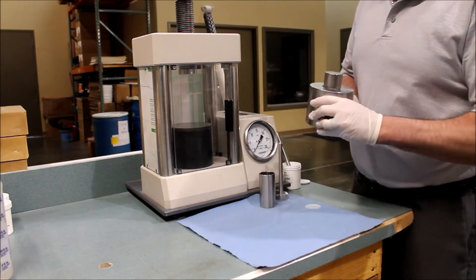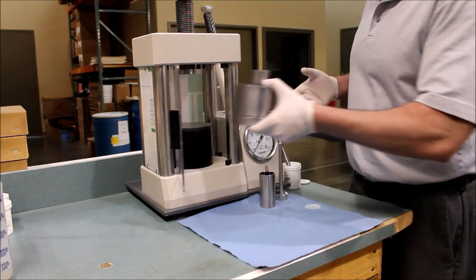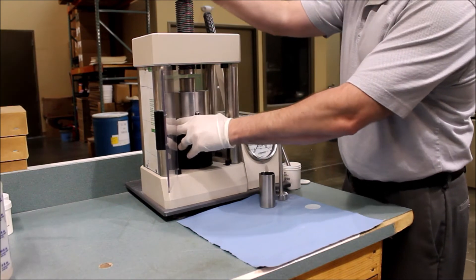Now place the assembled die set into the press and press until the tonnage is achieved, in this case 25 tons.